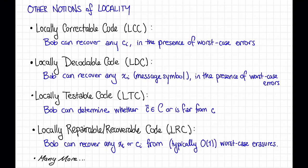There's a very related notion called a locally decodable code, or LDC. In this situation, Bob doesn't want to recover any ci, but rather he wants to recover any xi, that is, any single symbol of the message that Alice meant to send, again, in the presence of worst-case errors. Notice that if your code is systematic, then the message symbols appear as some of the code word symbols, and so a locally correctable code is stronger than a locally decodable code in that case.